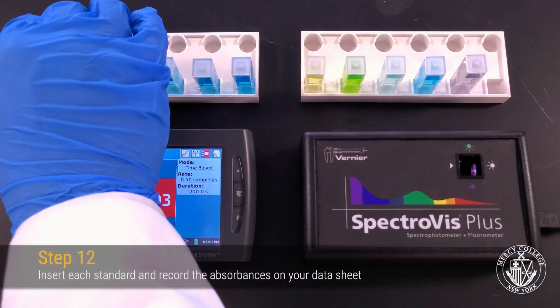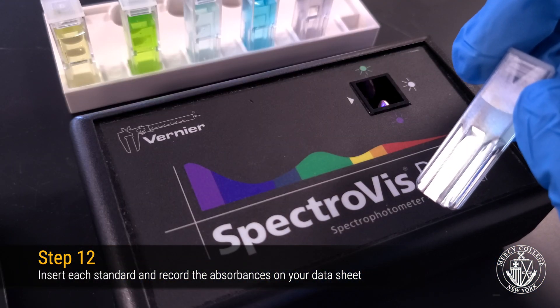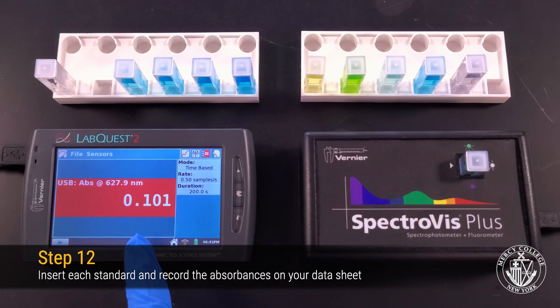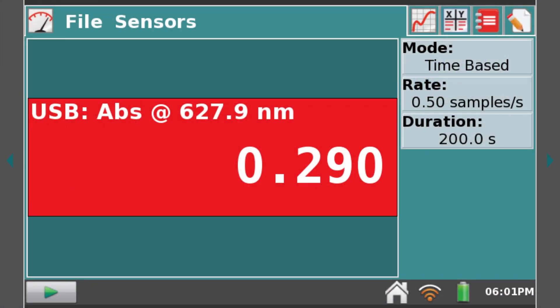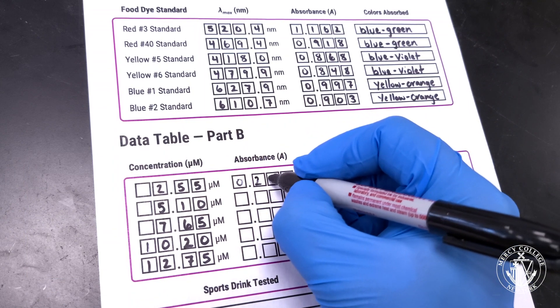Remove the blank and insert your most dilute standard to analyze first. Wait a few seconds for the absorbance reading to stabilize and record the value on your datasheet. Our first standard appears to have an absorbance of 0.289.